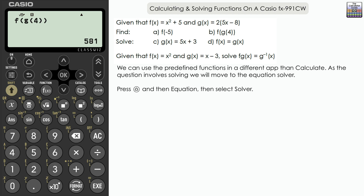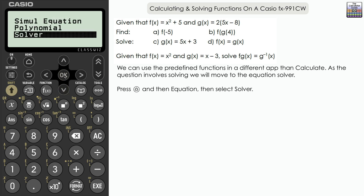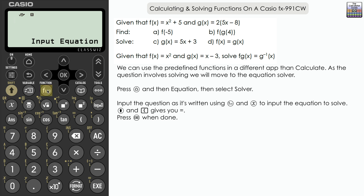Moving on to solving, we'll switch apps. The good thing about the FX 991 CW is that functions inputted into the function feature remain valid in other applications. Press Home, navigate to Equation, then select Solver. For Part C, g(x) equals 5x plus 3 — we're looking for the value of x that makes this true. Press Function to select g(x), then press the X key, close the bracket, input equals using Shift and left bracket, then 5x plus 3, and press Execute.